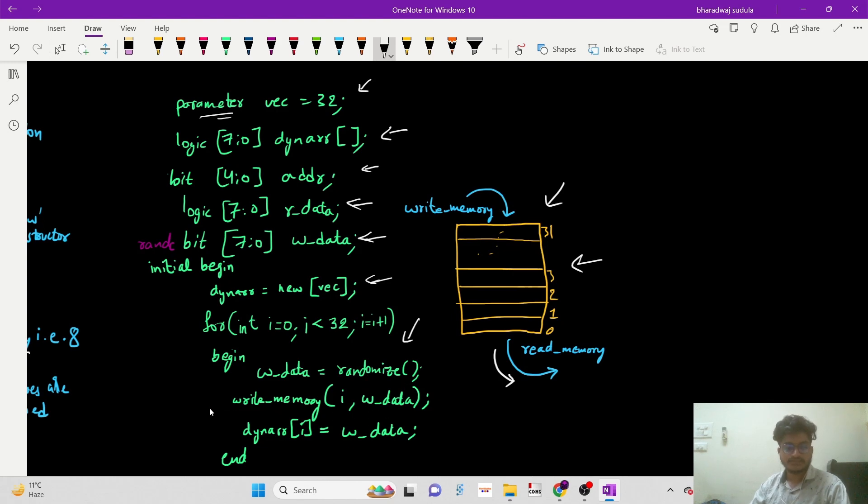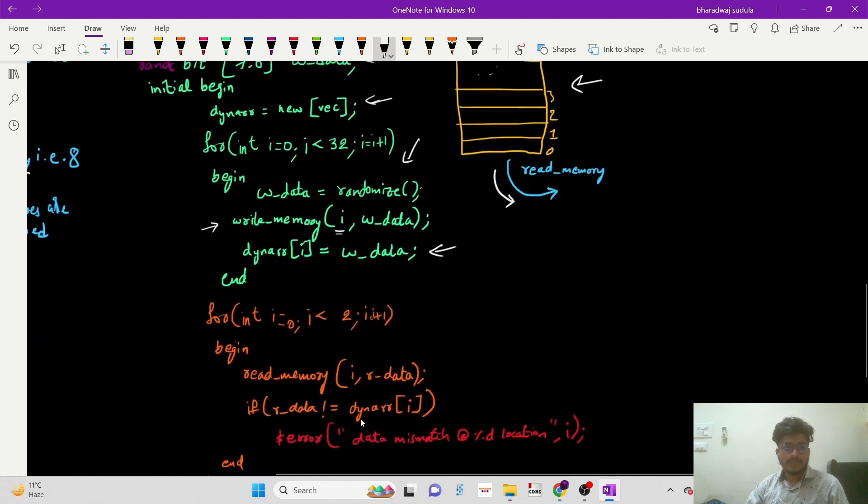This is the function write_memory where it writes data into the memory to a specific location. At the same time, for future evaluation, we are using this dynamic array assigned with the same write data. So this